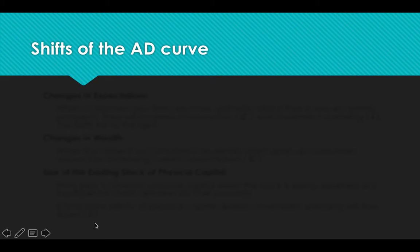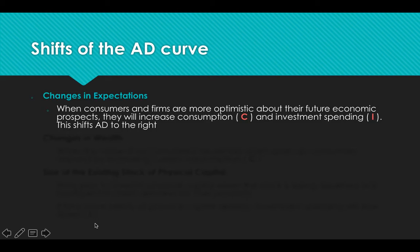Things that shift the aggregate demand curve: first, changes in expectations. If consumers are optimistic about the future, they're going to buy. They think times are going to be good, so they're going to go out and buy a new car, put a pool in their house, get that pair of shoes they wanted. And businesses are also going to increase their investment spending — if they think good times are coming and they're going to get more customers, they want to improve their business.